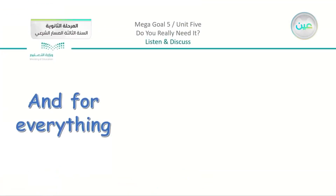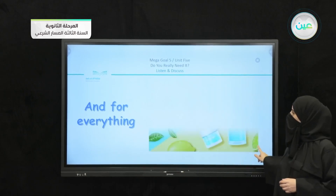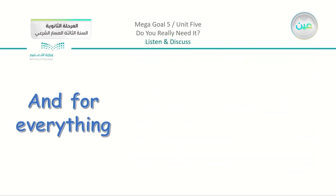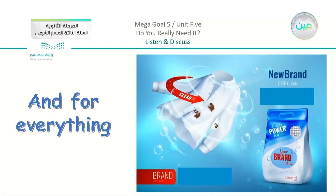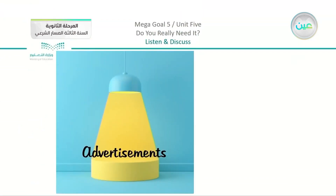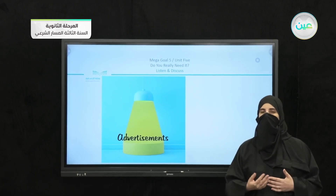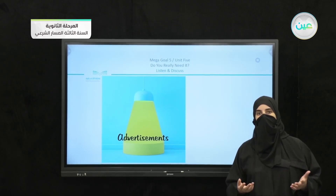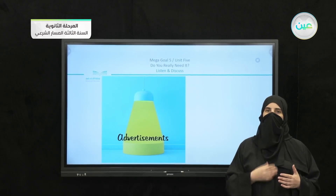Moving on, we can see that advertisements are everywhere and for everything. For example, we have different food products, body products, restaurants and cafes, and household products. In general, advertisements are about anything you can imagine. Think about all the different types I mentioned and others you can think of. Some advertisements are very unique — you are attracted to them and may remember them for a long time.